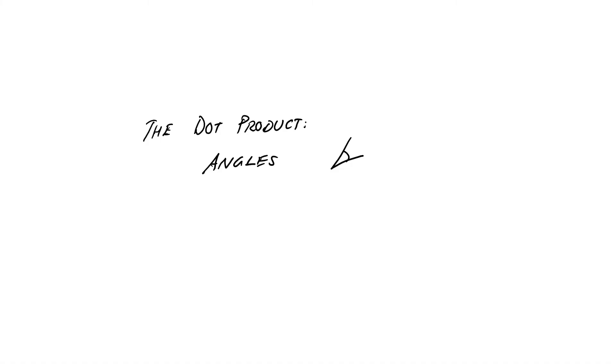Last episode we discovered that this dot product tells us things about the length of these vectors, and it also tells us things about their orthogonality. In this episode we're going to reveal the whole truth about this dot product — it's going to tell us about angles and things like that. So, stay tuned.